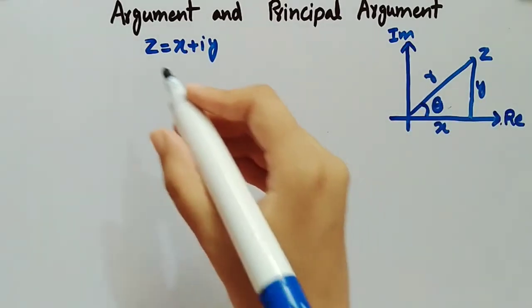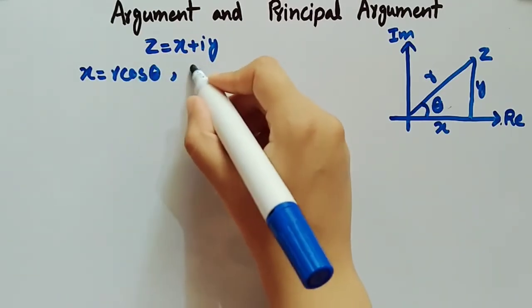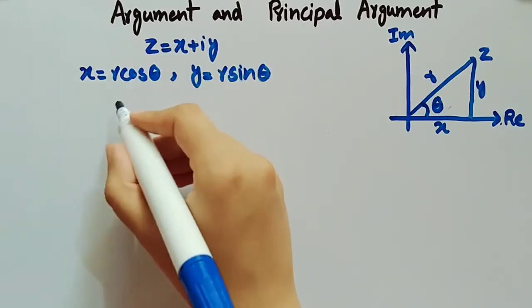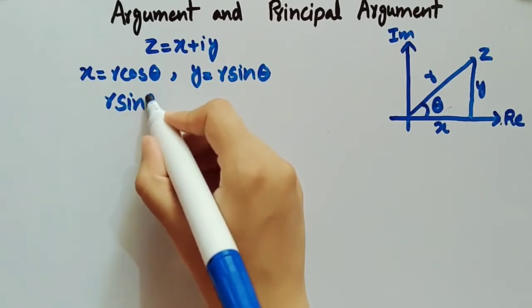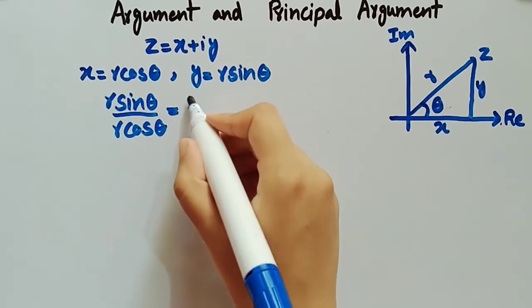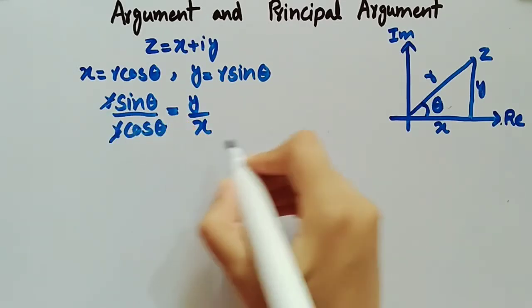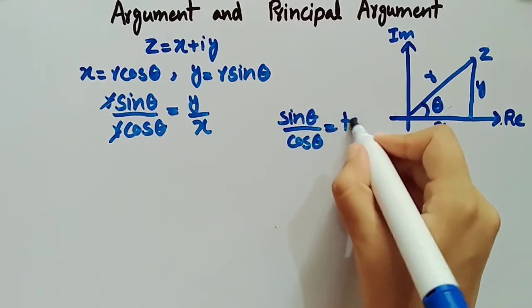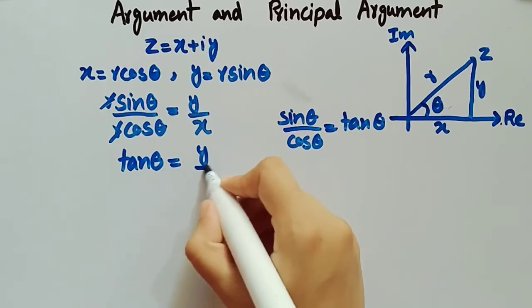From the polar form of a complex number we know that x is equal to r cos θ and y is equal to r sin θ. Dividing these: r sin θ divided by r cos θ equals y divided by x. The r cancels, and sin θ divided by cos θ is tan θ. So from here we get tan θ equal to y over x.